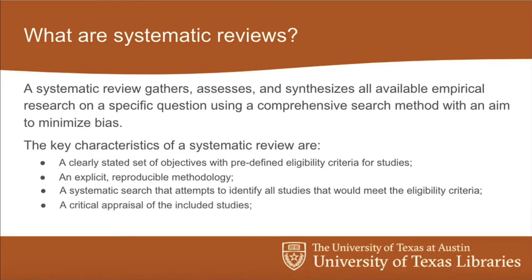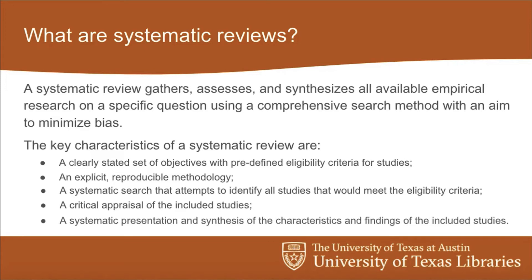Another key aspect of systematic reviews, which may vary a little by discipline, is the critical appraisal of included studies. In light of that minimizing-bias aspect, it includes an emphasis on whether these are highly credible sources, what their different methodologies are — that critical question of can we trust this article over another one, and why. And then there's a systematic presentation and synthesis of the characteristics and findings of the included studies, which covers both the analysis piece and the reporting — writing out your paper and synthesizing all of these things.